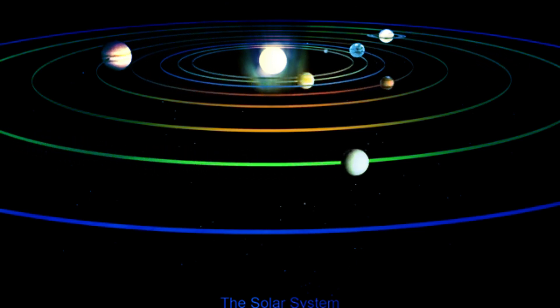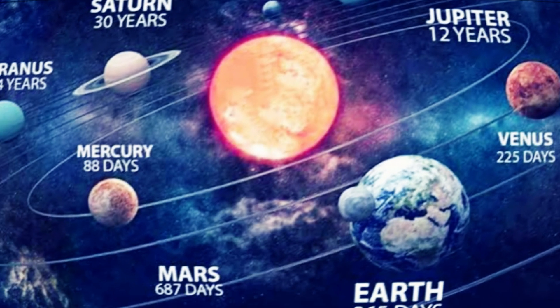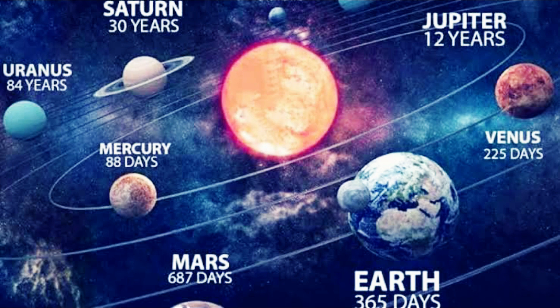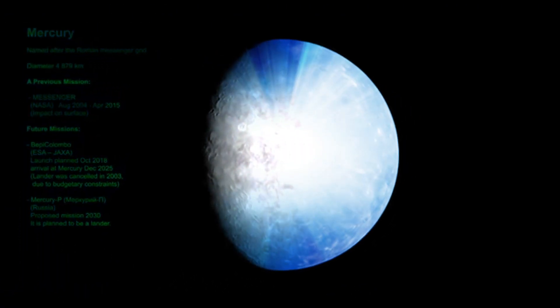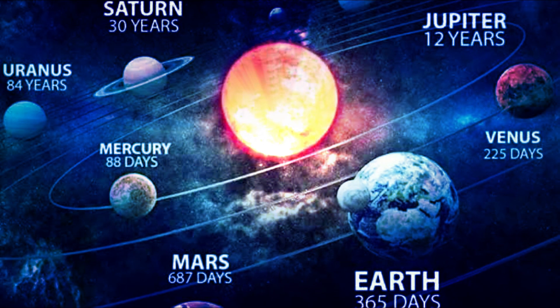That means if you are living on Mercury you will celebrate your birthday every 88 days. And the planet Venus takes 225 days to complete one revolution. Our Earth 365 days, that means one year. We are celebrating our birthday every one year because we are living on the Earth.